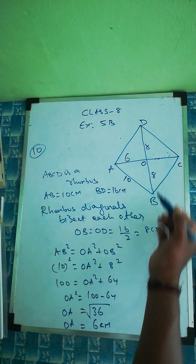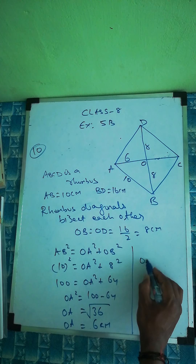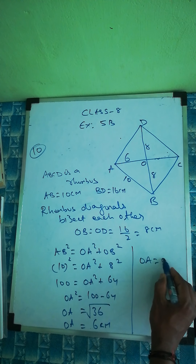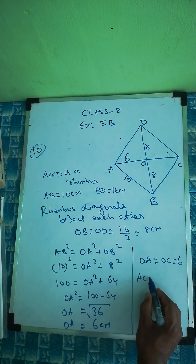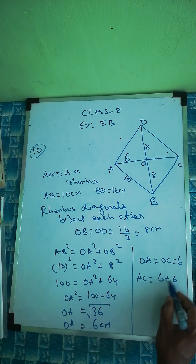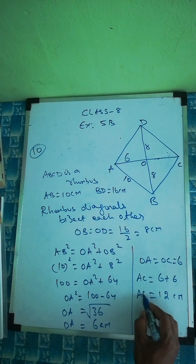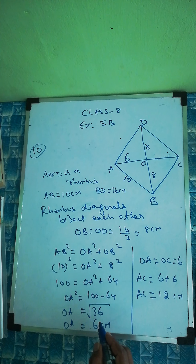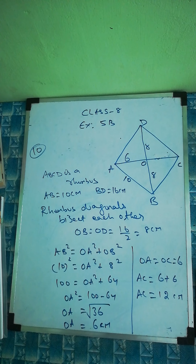Since the diagonals bisect each other, OA equals OC equals 6 centimeters. Therefore diagonal AC equals 6 plus 6 equals 12 centimeters. So the other diagonal AC is 12 centimeters. That concludes this exercise.